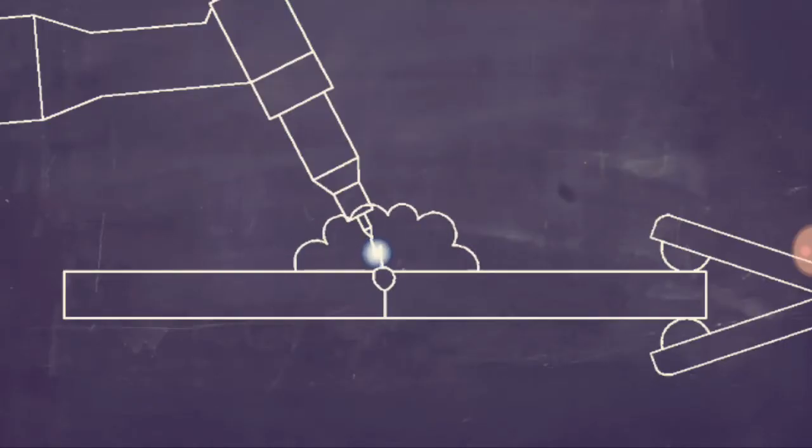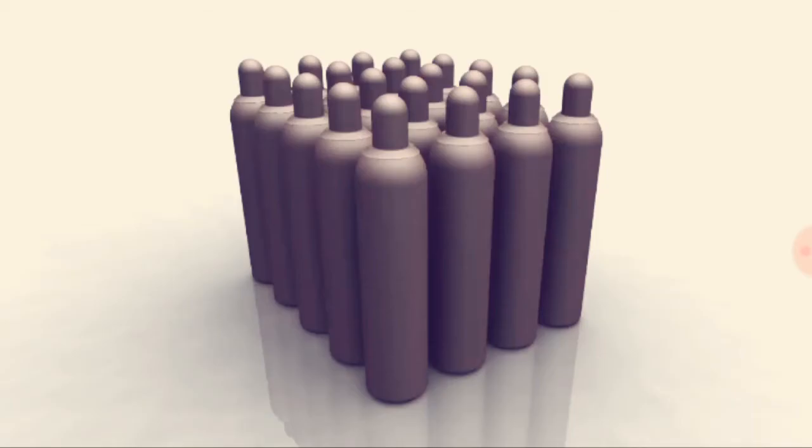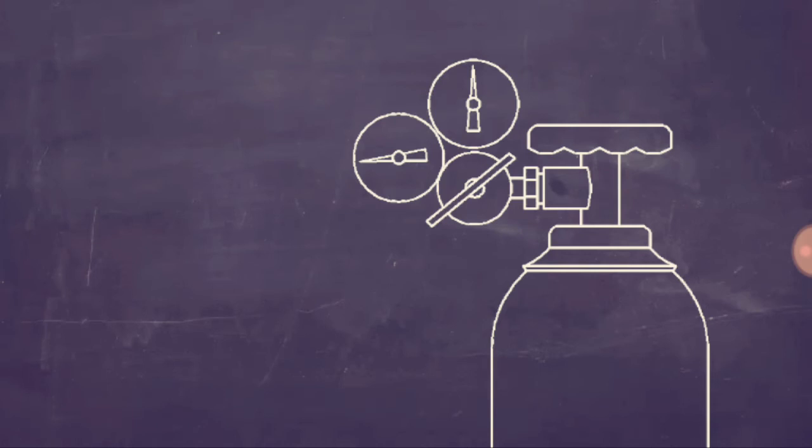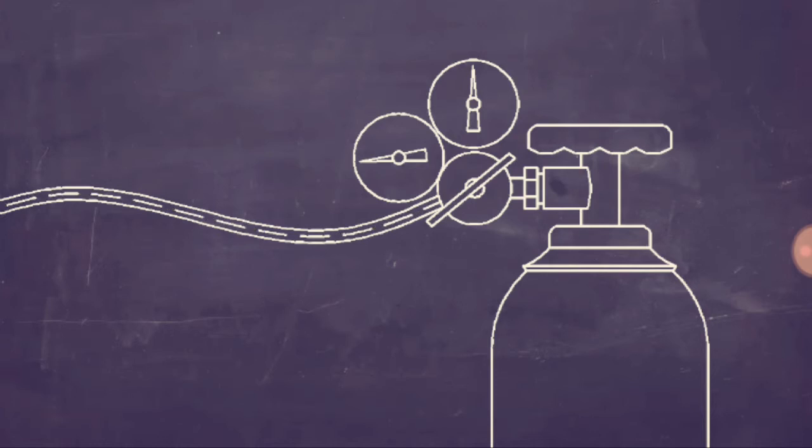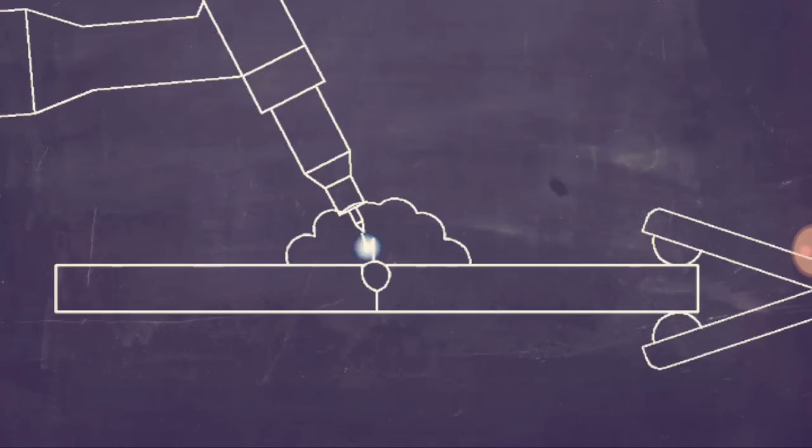In TIG welding, the molten metal is protected by a shielding gas. This gas, usually argon and sometimes helium or other gases, keeps the molten metal from reacting with oxygen and water vapor in the atmosphere. This shielding gas is stored in high-pressure cylinders like these. The pressure is reduced to a usable level by a device called a regulator. The shielding gas flows through a hose and comes out right at the point of the weld.